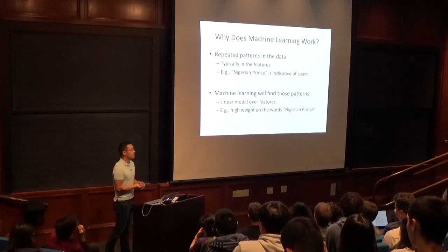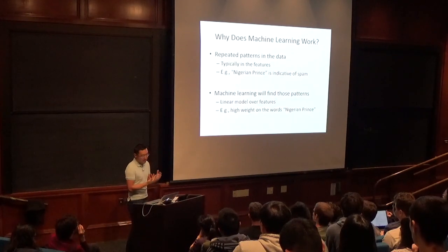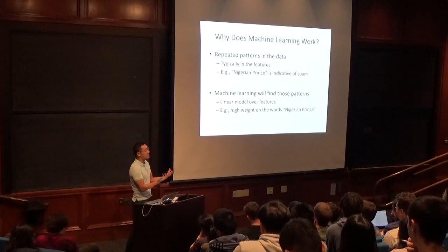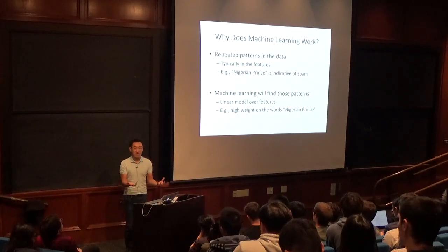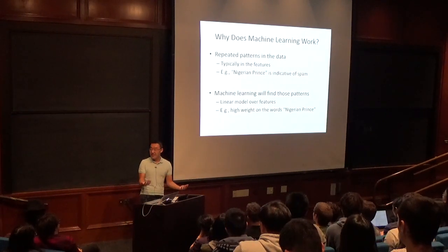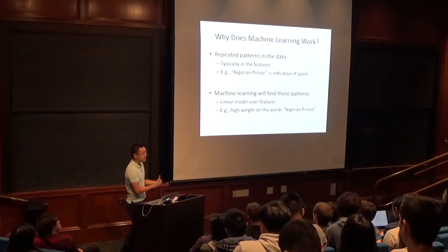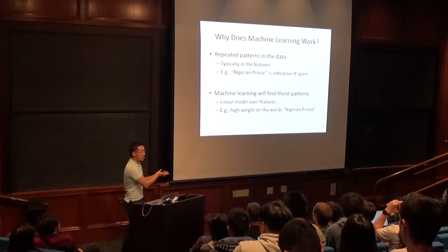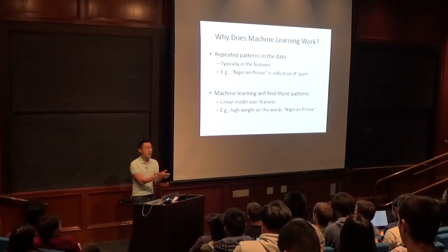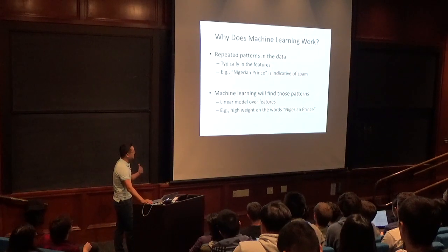Why should we expect this process to work at all? The best reason: there are repeated patterns in the data, and ideally those patterns are captured in your feature representation. For example, the words 'Nigerian prince' are typically indicative of spam. Given a large training set, the learning algorithm will learn to put a high weight on those words in W.